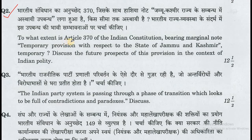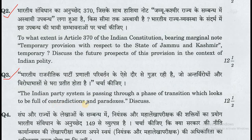Question number 2: To what extent is Article 370 of the Indian Constitution, bearing marginal note 'Temporary Provision with respect to the State of Jammu and Kashmir,' temporary? Discuss the future prospects of this provision in the context of Indian polity. Question number 3: The Indian party system is passing through a phase of transition which looks to be full of contradictions and paradoxes. Discuss.